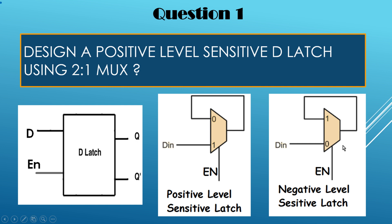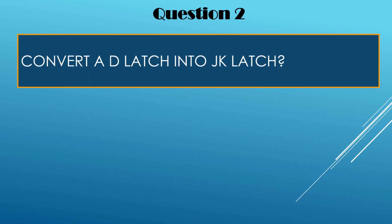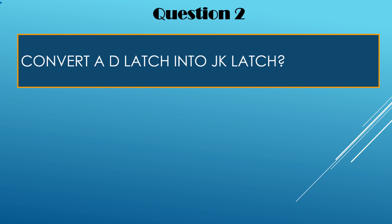To create a negative level-sensitive latch, apply the D input to input line 0 of the MUX and place the feedback loop on input line 1, because when Enable is 0, input line 0 passes to Q. When Enable is 1, the output is latched. Question number 2: convert a D latch into a JK latch. Your time starts now.